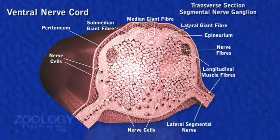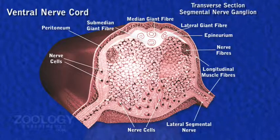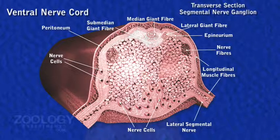Dorsally, four giant fibers — one median, one sub-median, and two lateral — run through the mass of connective tissue along the length of the entire nerve cord. They are filled with a homogeneous plasma-like fluid which helps in their contractions.